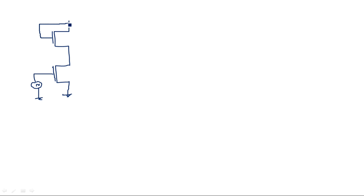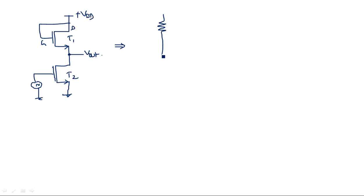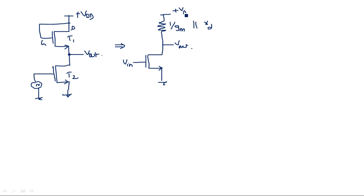The drain and gate are short-circuited, connected to VDD, with the drain terminal, gate, and source shown. The output is taken here. We label this as transistor T2 (load) and T1 (driver), with parameters Gm1, Rd1, Gm2, Rd2. In the equivalent diagram, the transistor T2 is replaced by a resistor of value (1/Gm) parallel Rd, giving us Vin, Vout, and VDD.